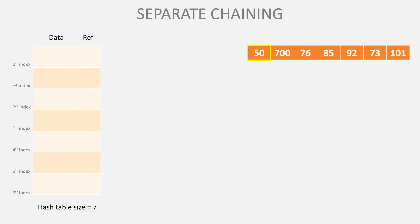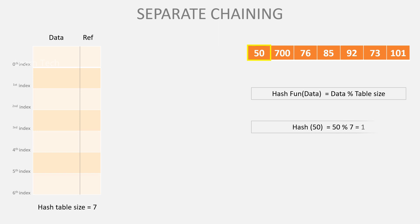If I use a hash function, I will use DataMod7 — that means Data mod 7. First, for 50: 50 mod 7 equals 1. So 50 is stored at index 1 in the data part, and its reference is null.